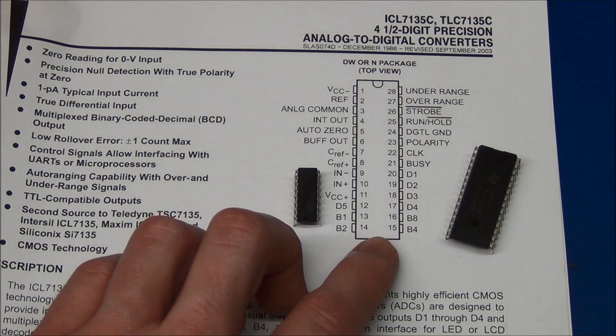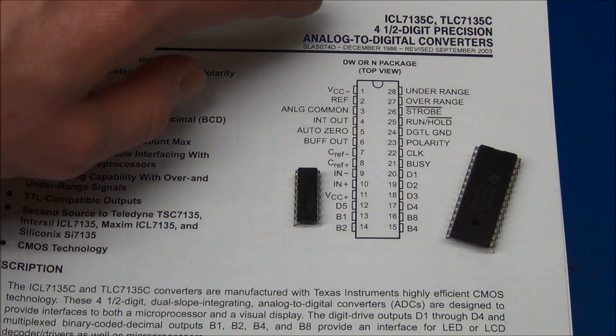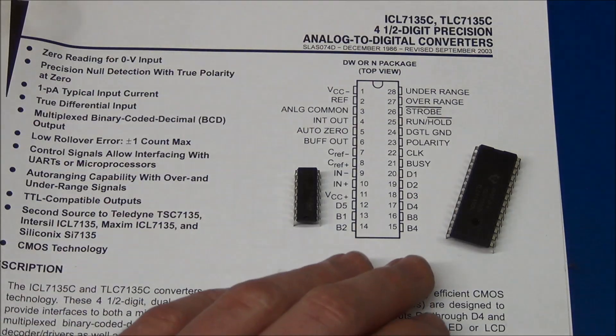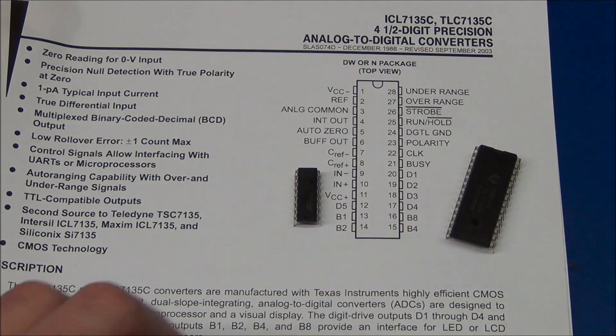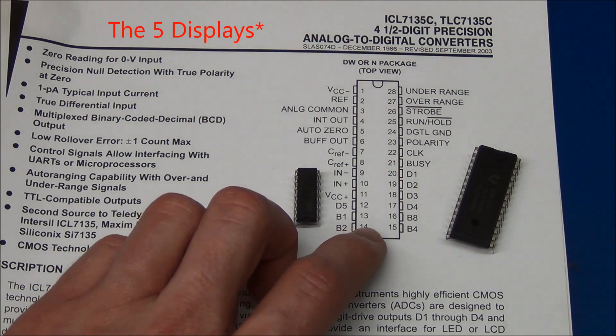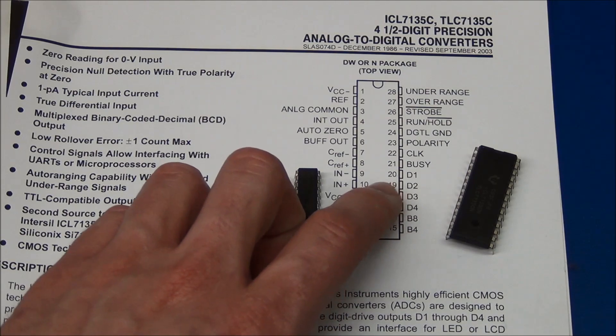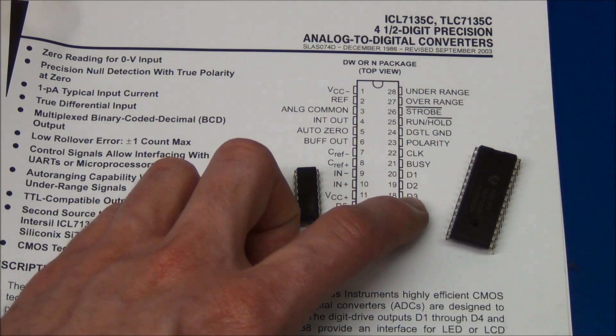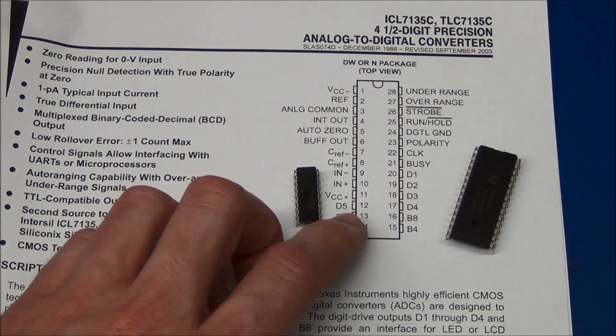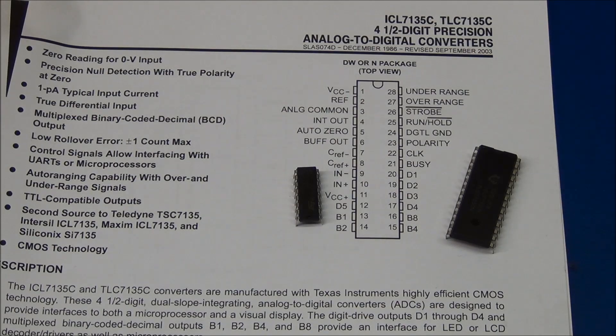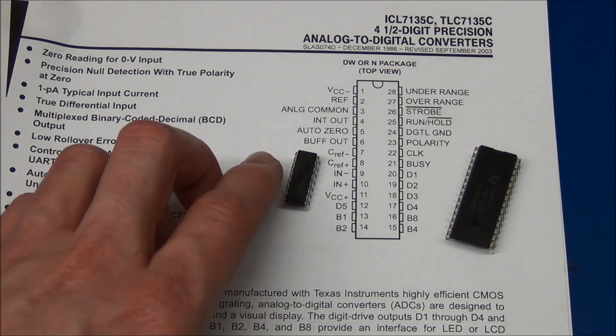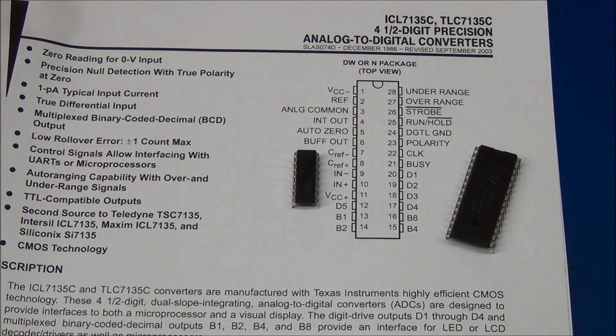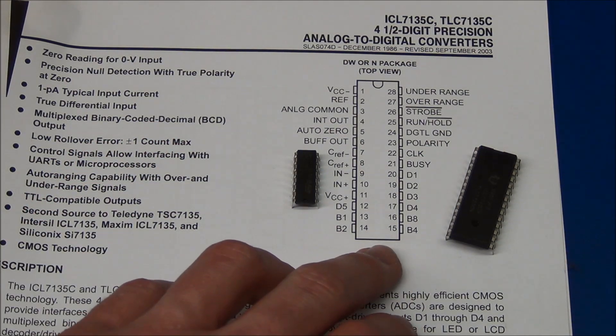But that's not the only problem with that, because these outputs are also multiplexed. So it will send out all four and a half digits on these four pins, and will alternate between the five. And it will tell you which one by enabling one of these DE outputs as well. So in that way you can demultiplex it, and you can actually do that just with one of these and some transistors. But I will make another video about that.